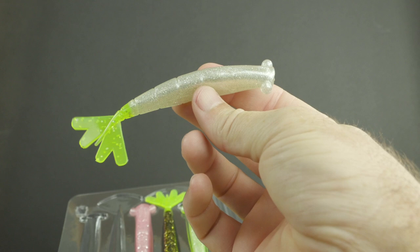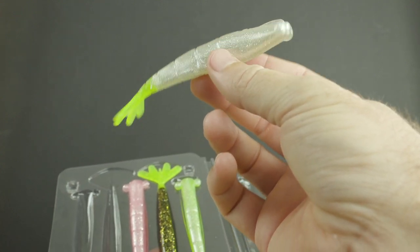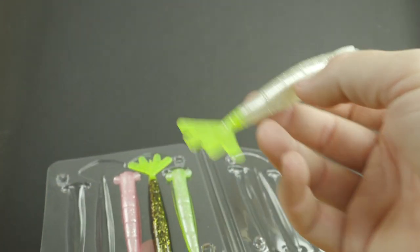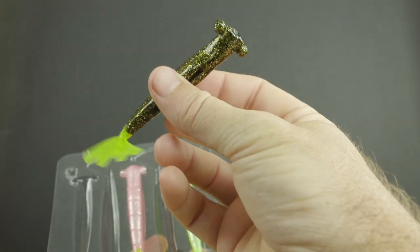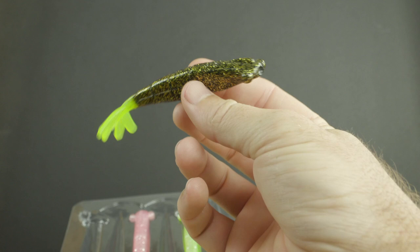Now we have the slam shady with the chartreuse tail - that's going to be a good one as well. Slam shady is our second most popular of all of our original colors. Then we have gold digger, so gold digger with chartreuse tail.